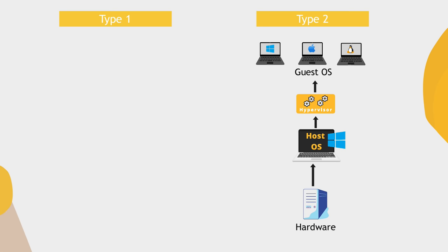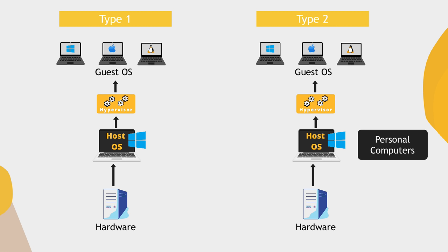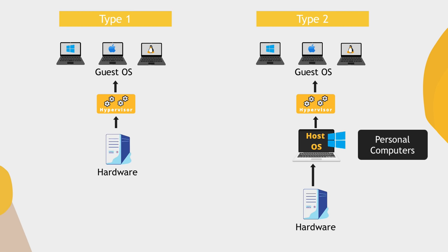Type two hypervisors are typically used for personal computers for the use cases I just described. However, for big servers that companies are using, you have the type one hypervisor, which works in exactly the same way — but the key difference is that instead of installing a hypervisor on a host operating system, you install it directly on the hardware. That's why type one hypervisors are also called bare metal hypervisors — the hypervisor controls the hardware resources directly, sitting on top of the hardware and controlling everything.